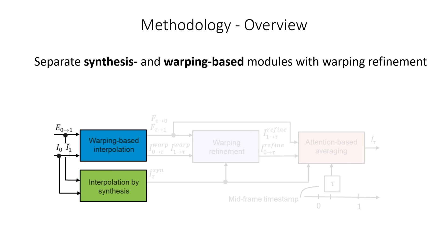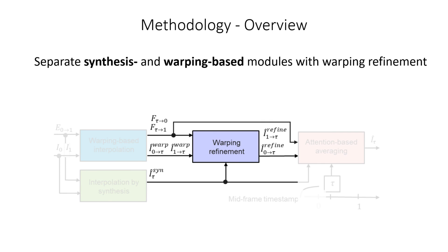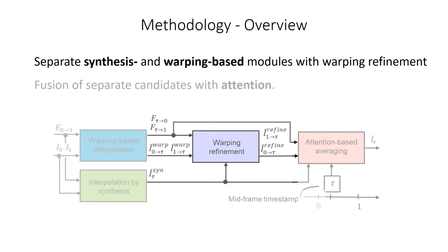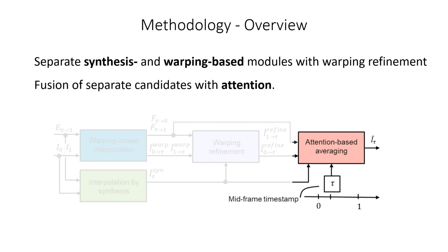The three outputs of these modules are used to perform a warping refinement step before being fused in an attention block. This block only predicts blending parameters for each interpolated frame, thus leveraging the advantages of both blocks by only choosing the best pixels in each interpolated frame.